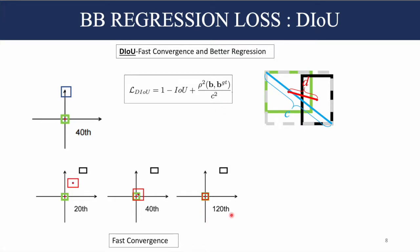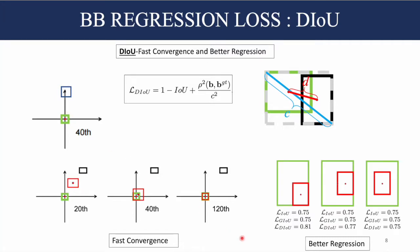With DIOU loss, over iterations the predicted bounding box does not increase its size but moves directly towards the ground truth bounding box, governed by the distance factor. It converges by just the 120th iteration. In the horizontal or vertical orientation case, the gradient is also large since it is governed by distance, not area. Across the three regression cases, DIOU loss produces different values, leading to alignment of the centers of the two bounding boxes.